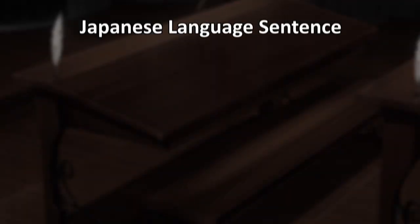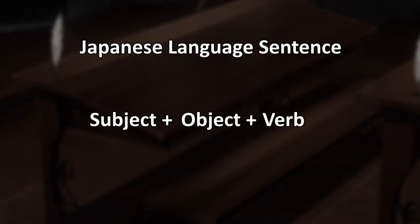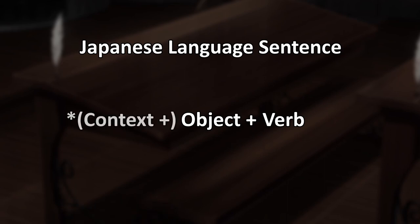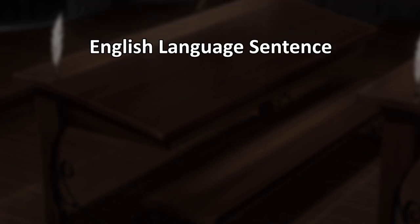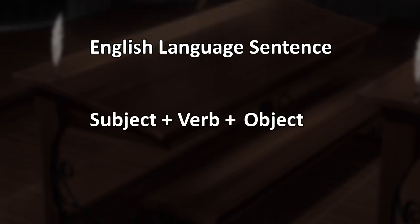This has to do with how in the Japanese language, it's pretty common to drop the subject in a sentence when it's obvious from the context what it is. But unfortunately, this doesn't work in English, and you need a subject to make a correct sentence.